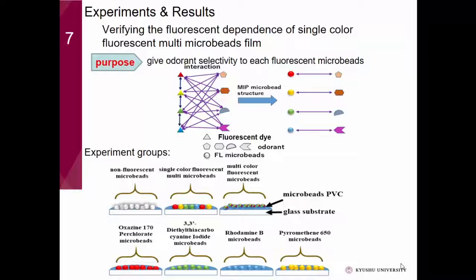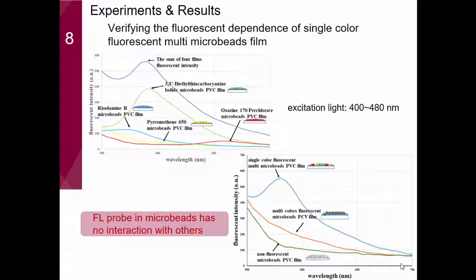So we have seven groups of films. One film has no fluorescent beads, one is a mixture of four kinds of single-color microbeads, one has beads made of four different fluorescent dyes combined, and the other four films each contain one single fluorescent dye microbead. From these two pictures, the sum of the four single-color microbead intensities is almost the same as the multicolor fluorescent microbead film. So we can conclude that the fluorescent probes in the microbeads have no interaction with each other.